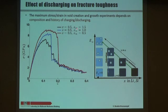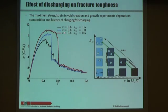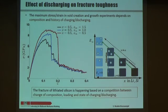Here I'm showing a specimen discharged from x = 1.5 (Li1.5Si) to x = 0.5 (Li0.5Si), compared with a relaxed sample at the same final composition. As you can see, the amount of discharging has an effect: it decreases the instability stress of the system. So discharging state also affects fracture. The fracture of lithiated silicon is therefore based on a competition not only of composition change and loading, but also the state of charging and discharging.